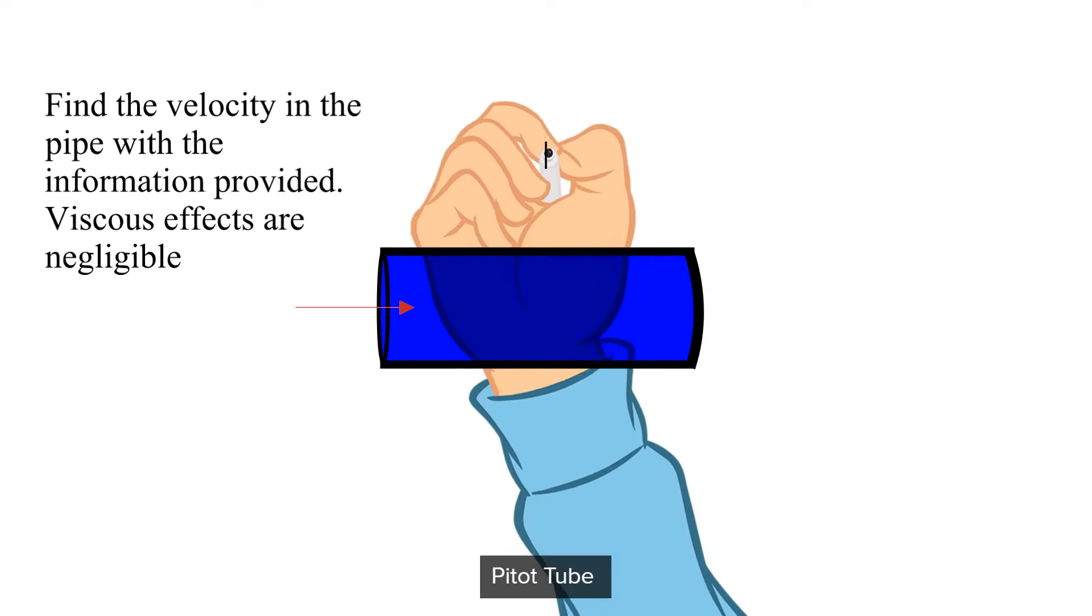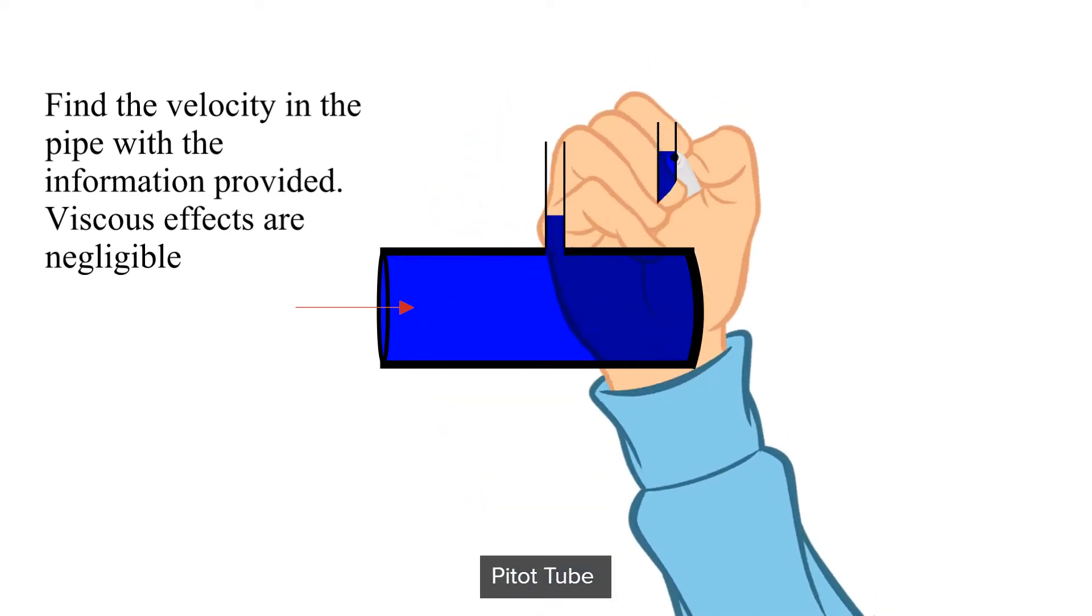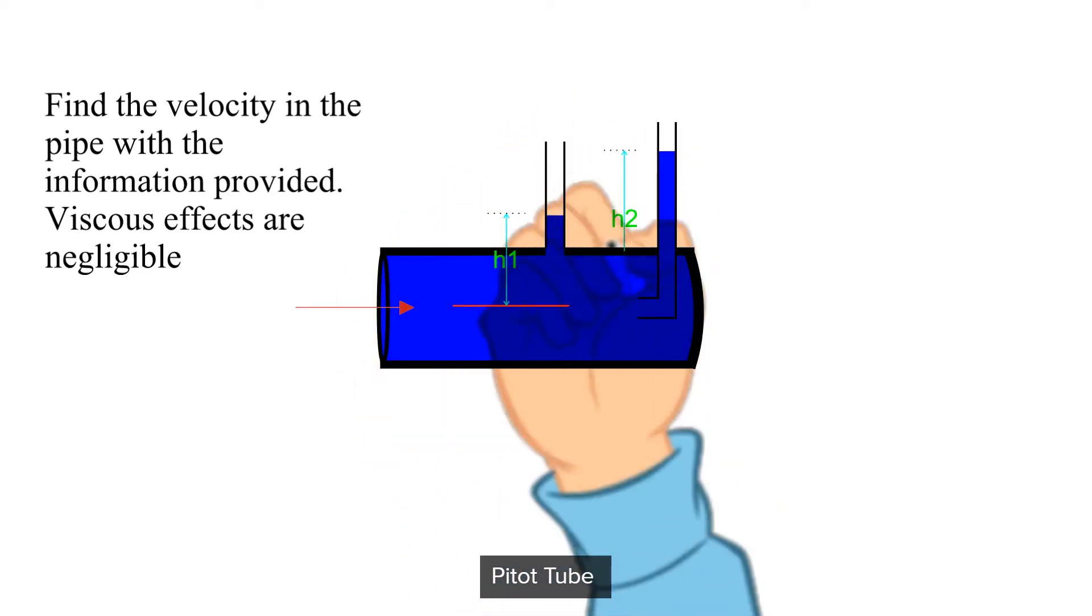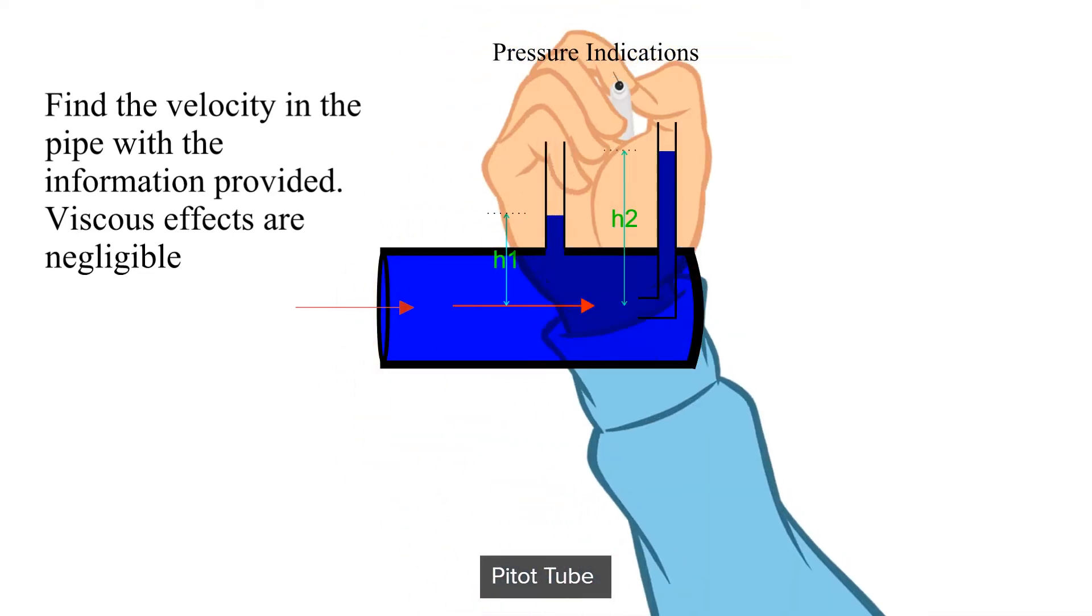First we need a pipe with water flowing in it. Next we need two indications of pressure. We will use standpipes, which indicate pressure by the height of the supported water column in each one.